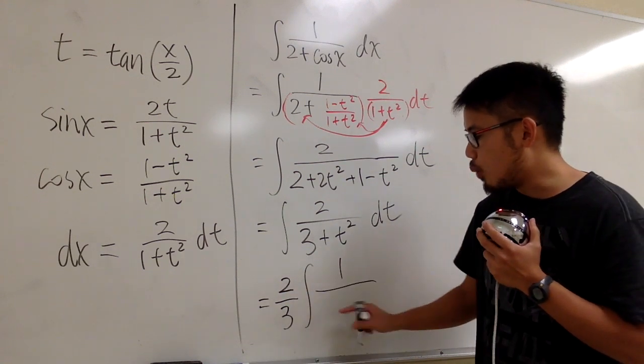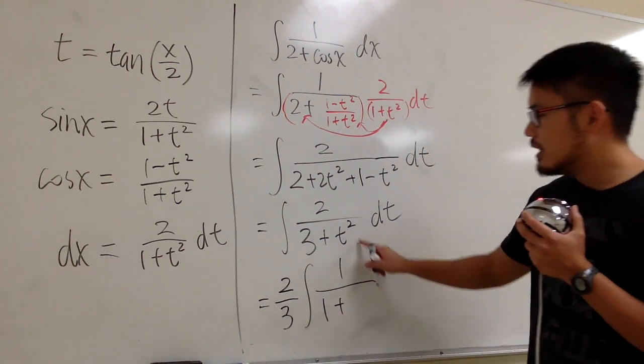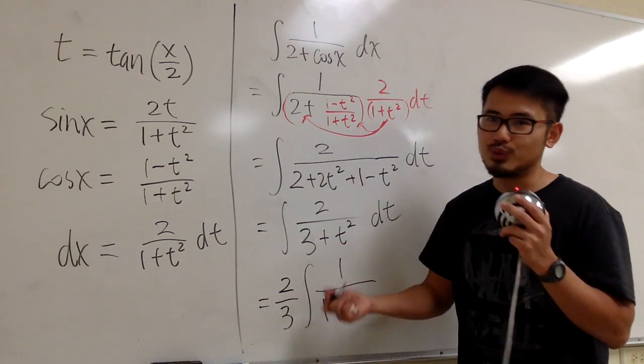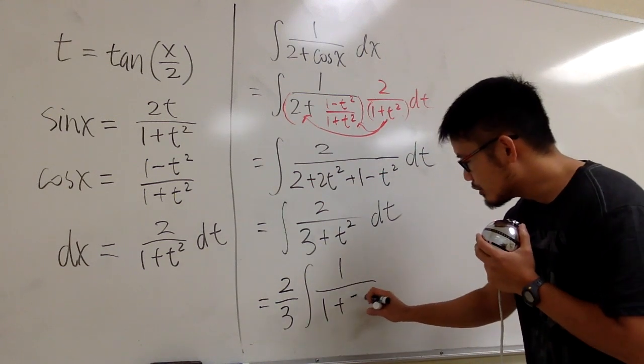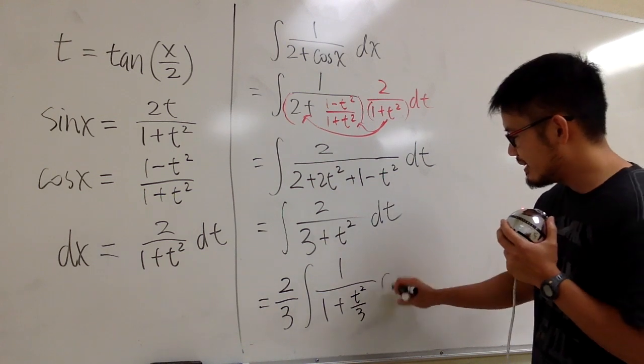I factor 3 out from the denominator, so this will become a 1 right here. And then, we have a plus. Originally, this is t squared, but then we factor out the 3, so what should we have? Well, this is going to be t squared over 3, like this, okay? dt.